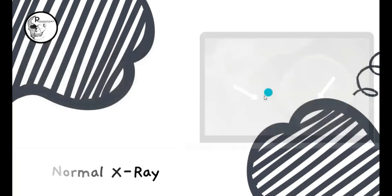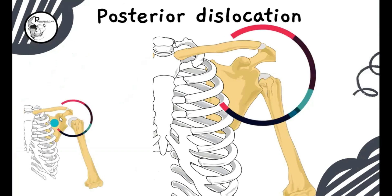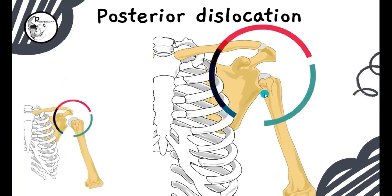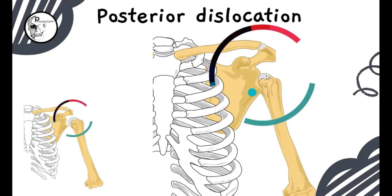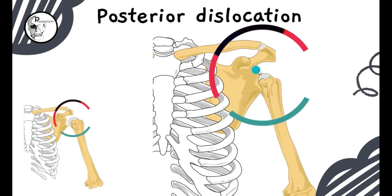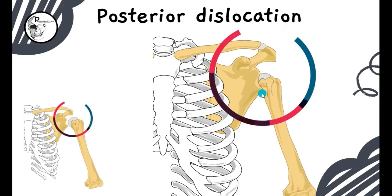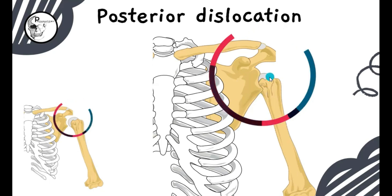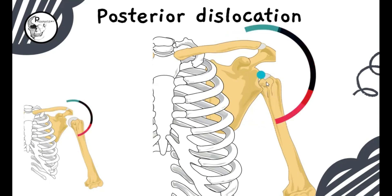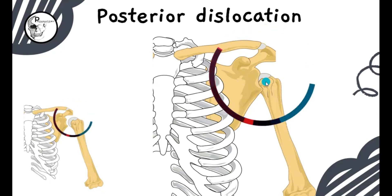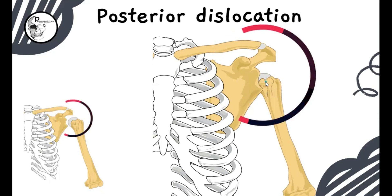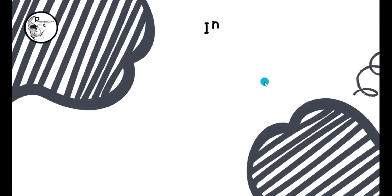The same thing is shown with an illustrative diagram. Here you can see the normal shoulder joint, and in the posterior dislocation the head of the humerus has been pushed behind the scapula, away from the glenoid cavity — that is posterior dislocation of the shoulder joint.